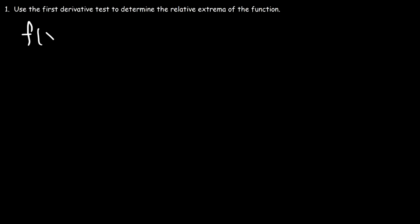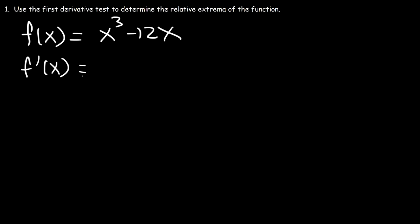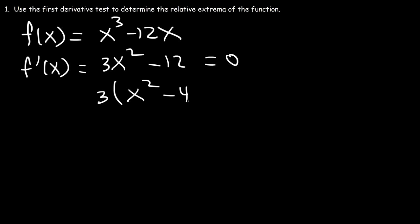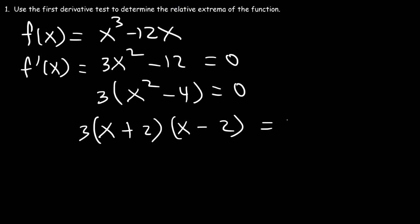Now let's try f(x) = x³ - 12x. Use the first derivative test to determine all of the relative extrema. We'll follow the same process: find the first derivative, set it equal to 0, and get the critical points. The derivative of x³ is 3x², and the derivative of 12x is 12. Taking out the GCF of 3, we get x² - 4, which factors using difference of squares into (x + 2)(x - 2). So we have two critical numbers: x = 2 and x = -2.